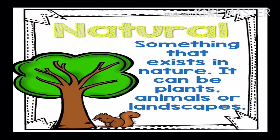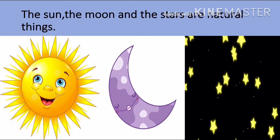Natural — something that exists in nature. It can be plants, animals or landscape. Look at these pictures: the sun, the moon and the stars are natural things. They have been given to us by nature.